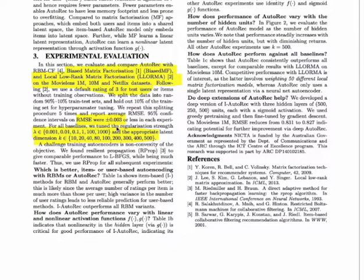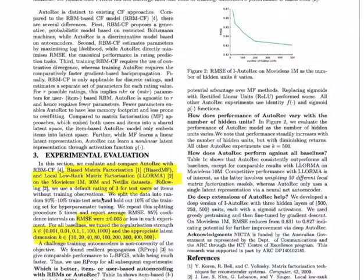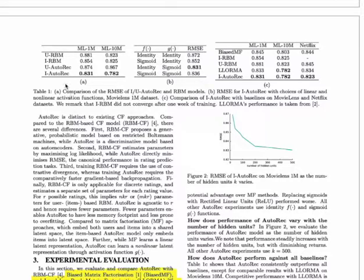Like biased matrix factorization and local low-rank matrix factorization, and they are reporting several metrics like root mean squared error on different values of parameters. Now if you look at Table 1a, you can see that their method of item-to-item collaborative filtering using autoencoders is able to beat all the previous benchmarks by a large margin.